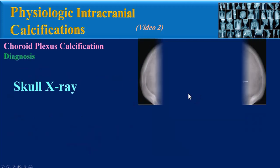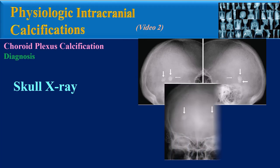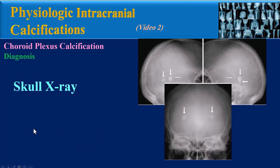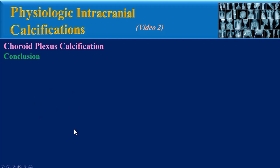For diagnosis, we can use skull X-ray. These lateral skull images show bilateral choroid plexus calcifications, which we can also see in the frontal view. Another imaging modality is, of course, CT scan, as explained before.